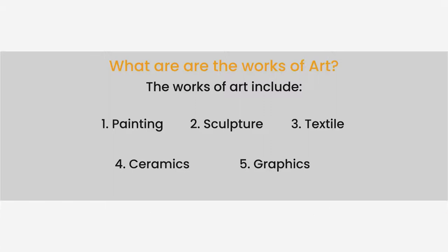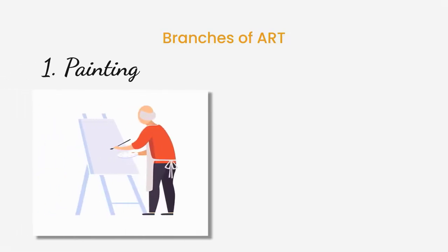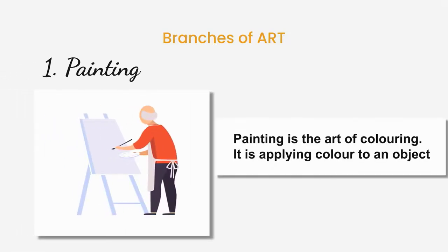Now, what are the branches of art? Number 1: Painting. Painting is the art of coloring. It is applying color to an object.